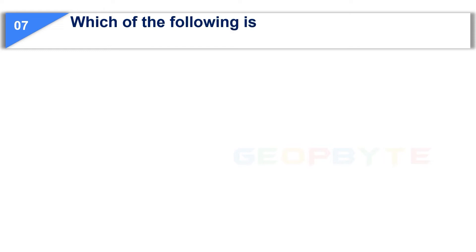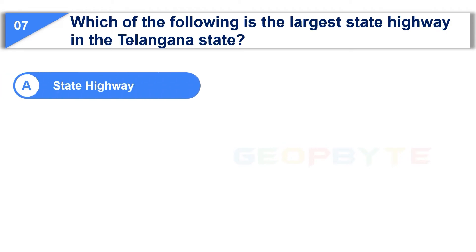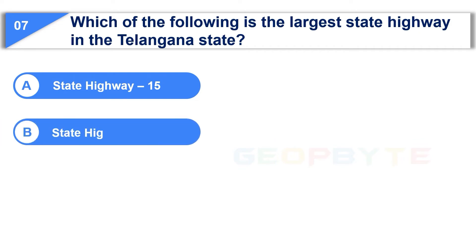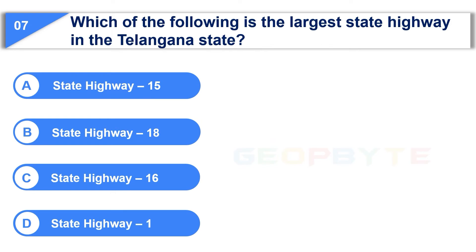Moving to the next question: which of the following is the largest state highway in Telangana state? Option A: State Highway 15, Option B: State Highway 18, Option C: State Highway 16, Option D: State Highway 1.